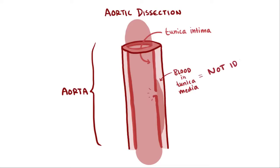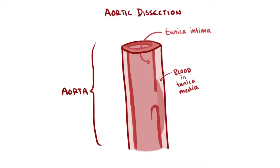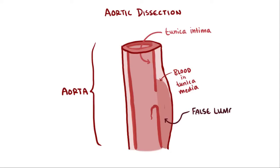This is widely accepted as an unideal situation. As the high-pressured blood continues to shear more and more of the tunica intima off the tunica media, blood starts to pool between the two layers, increasing the outside diameter of the blood vessel. The area where blood collects between the tunica intima and the media is called a false lumen, and the true lumen is the regular lumen inside the blood vessel.